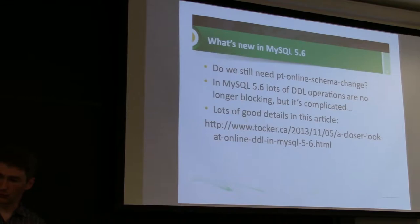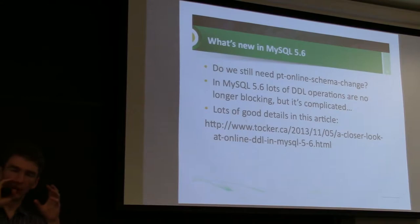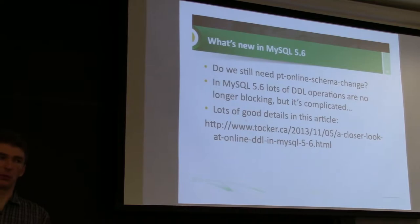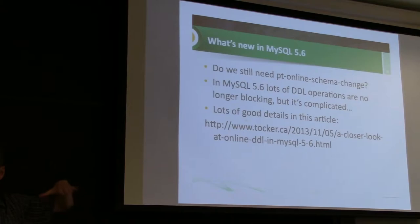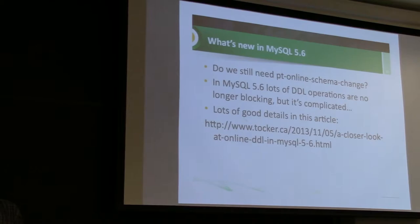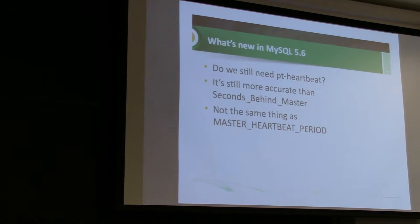Other things in 5.6: do you still need to use pt-online-schema-change? There's a lot of online DDL built into 5.6, but it's a little bit complicated in terms of what's actually online and what's not. Even if it's online on the master, it could be blocking on the slave. I encourage people to read the blog post that Morgan Tocker wrote, which really goes through in great detail all of the online DDL features in 5.6 — what's online and what's not. If you read that, you can figure out whether you still need to use pt-online-schema-change or whether you can just run an ALTER TABLE on your production database and not worry about it.